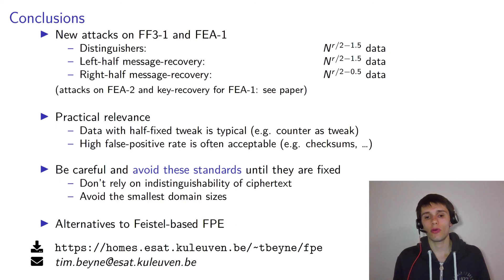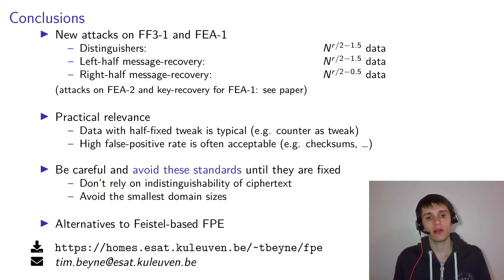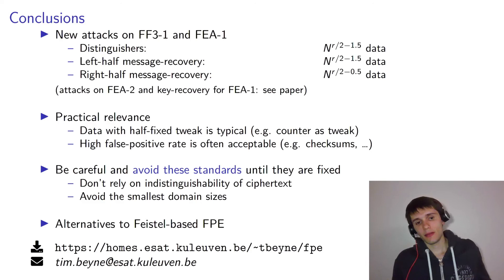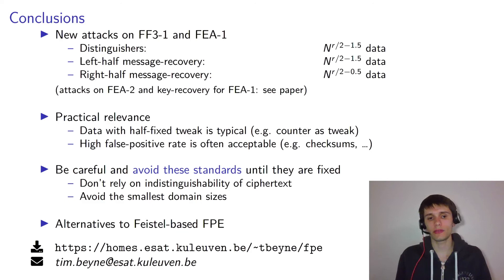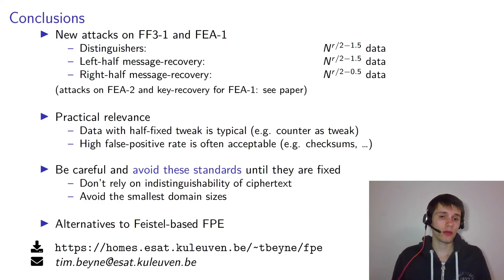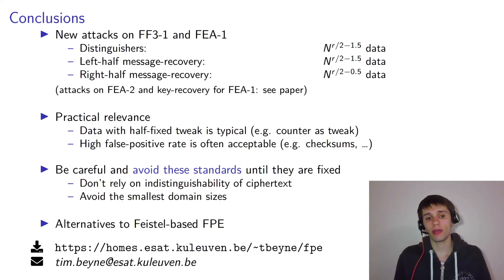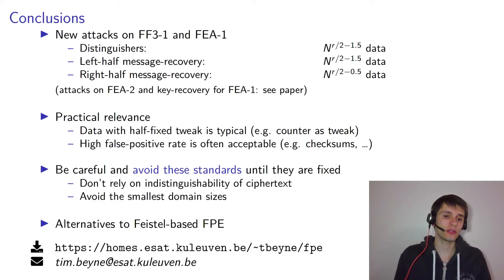The practical relevance of these attacks depends on how exactly you're using these ciphers. In many cases these attacks will be practical, or at least can be. For example, getting data with half of the tweak fixed is not that difficult — a very common way of using a tweak is to put in a counter that automatically gives this. Also, you don't necessarily want an advantage of one — a high false positive rate is often acceptable. For example, in the credit card case, there's a checksum digit at the end which reduces the effective domain size, so you don't need a very low false positive rate. In general, be very careful when using these standards and check every application.